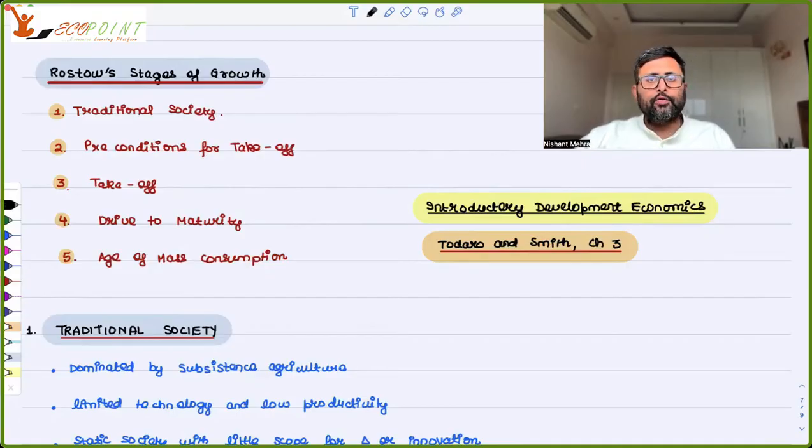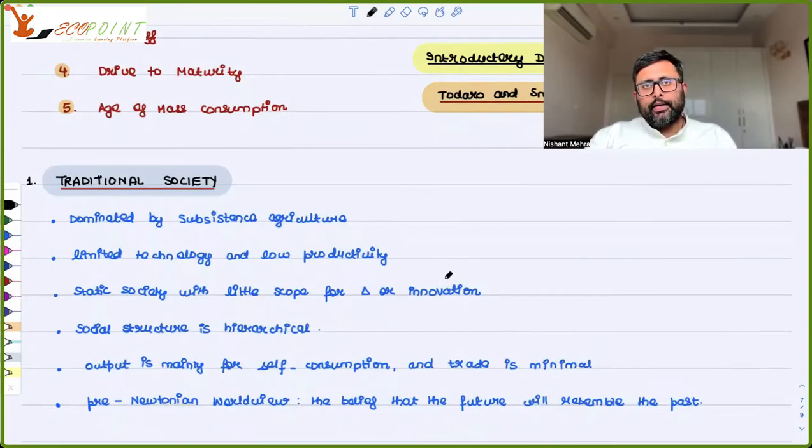Let's look at each of them one by one. Initially, there is a traditional society. When I say traditional society, what do we mean by this? That mainly there is subsistence agriculture. People are producing everything for themselves only. They are producing food grains or growing crops mainly for their own consumption, not for the market. Whatever technology is there, that is very limited, very low level. Because of the limited technology, production is for self-consumption, so productivity is also very low.